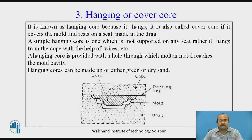Hanging or cover core. It is known as a hanging core because it hangs. It is also called a cover core if it covers the mold and rests on a seat made in the drag. A simple hanging core is one which is not supported on any seat — rather, it hangs from the cope with the help of wires. A hanging core is provided with a hole through which the molten metal reaches the mold cavity. Hanging cores can be made up of either green or dry sand.